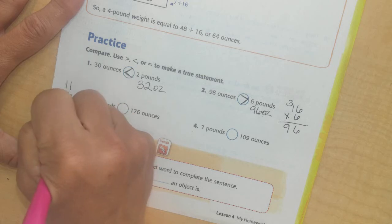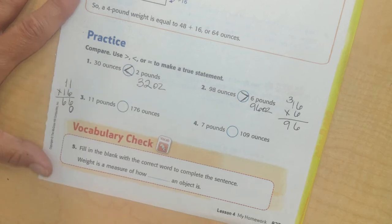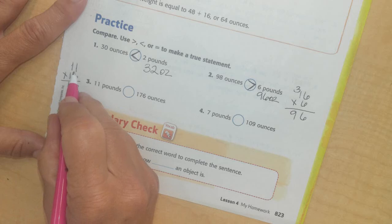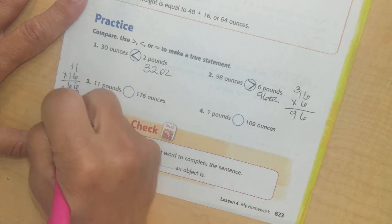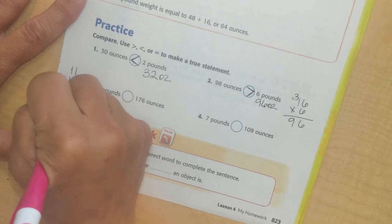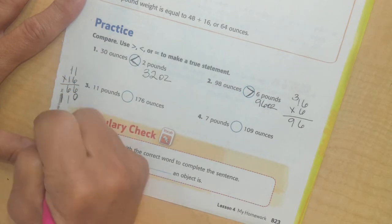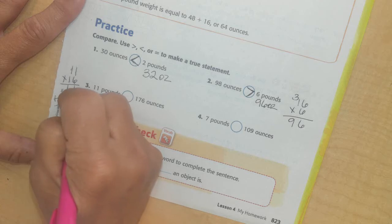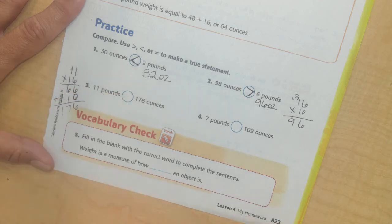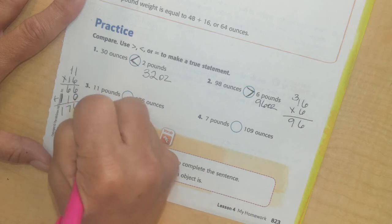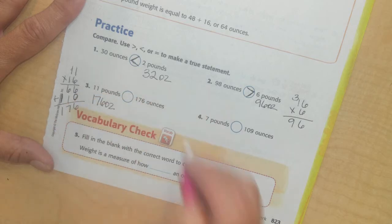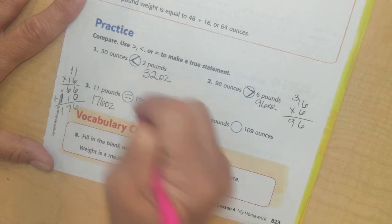So 1 times 6 is 6 and 1 times 6 is 6. Now I'm going to put this here because I don't need to use that place value anymore. Now I'm multiplying 11 times 10. It's 110. So I'll do 1 times 1 is 1 and 1 times 1 is 1. There's my 110. Add these together. 6 plus 0 is 6, 6 plus 1 is 7, 176 ounces. What's bigger? Equals.